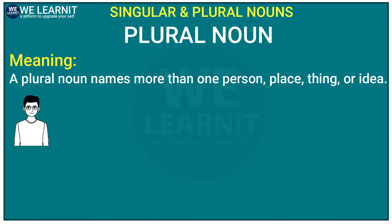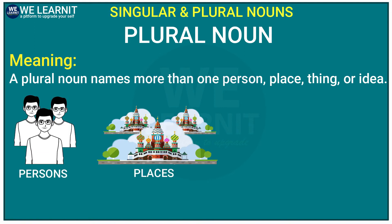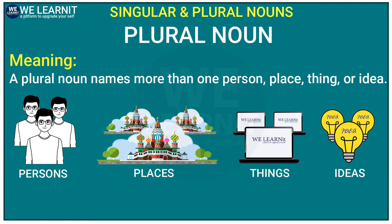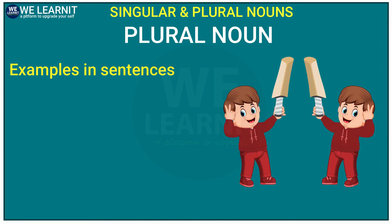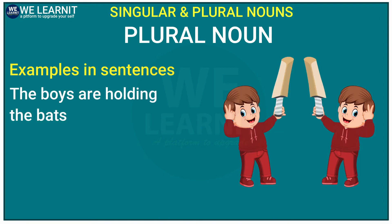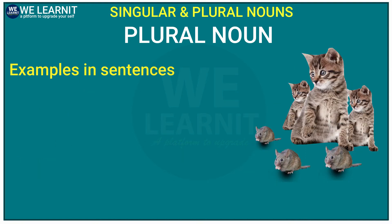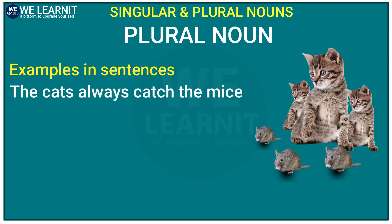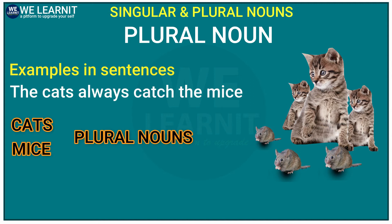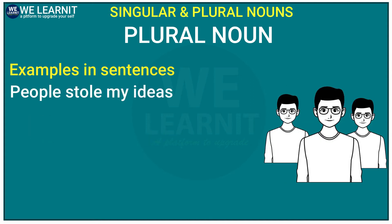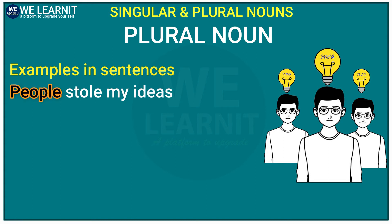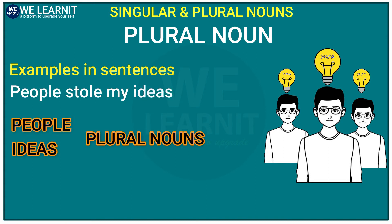A plural noun names more than one person, place, thing, or idea. It is more in number. Let's look at some examples: 'The boys are holding the bats.' Here, 'boys' and 'bats' are plural nouns. 'The cats always catch the mice.' Here, 'cats' and 'mice' are plurals. 'People stole my ideas.' Here, 'people' and 'ideas' are plural nouns.